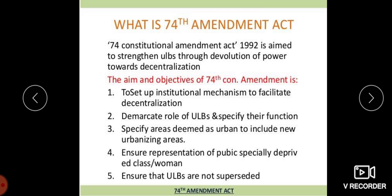The 74th Constitutional Amendment Act of 1992 aims to strengthen Urban Local Bodies through the devolution of power towards decentralization. The main aims and objectives of the 74th Constitutional Amendment are to set up an institutional mechanism to facilitate decentralization, demarcate the role of Urban Local Bodies, specify their functions, specify areas deemed as urban to include new urbanizing areas, and ensure representation of the public especially deprived classes and women, and ensure that ULBs are not suspended.